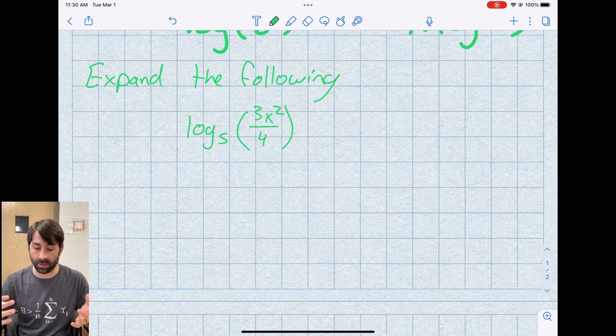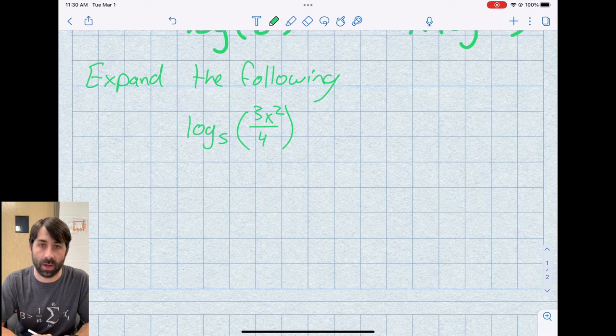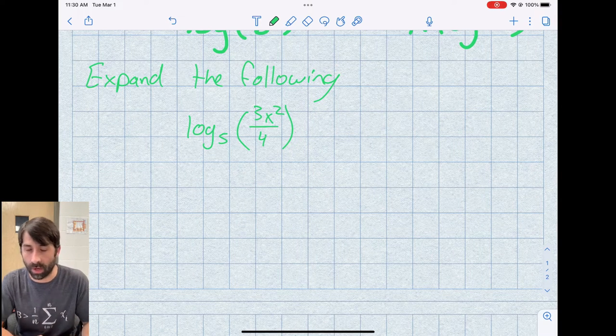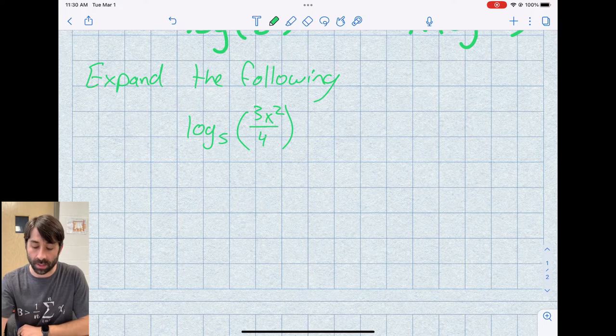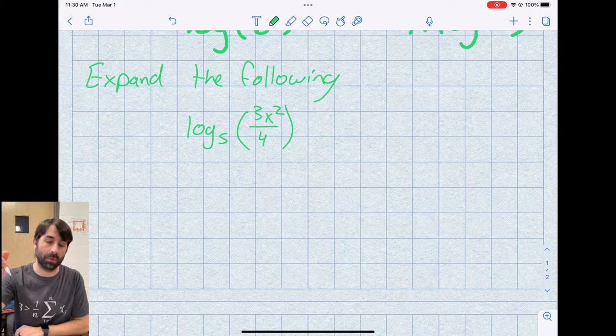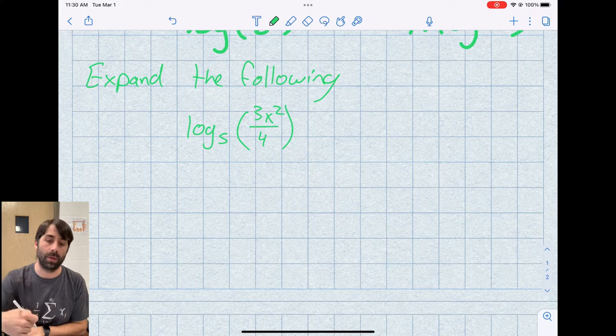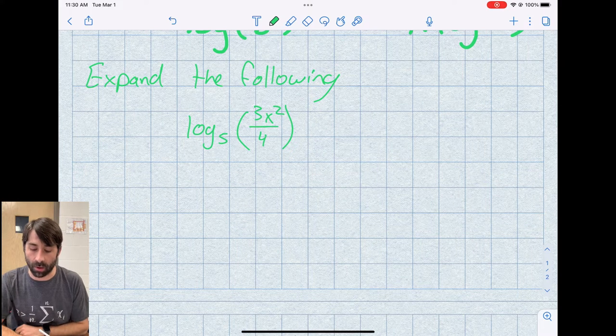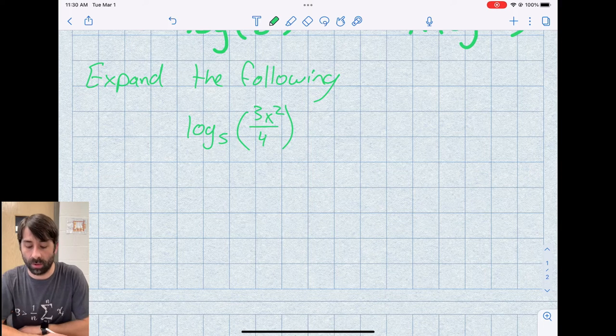But as of now, this is just kind of a performance task, like can you apply the properties of logarithms to rewrite, whether it's convenient or not. So in this case, once again, if I'm expanding, I'm going to start with the product rule and the quotient rule, and I'm going to end with the power rule. If I was consolidating, I kind of go the other way around.